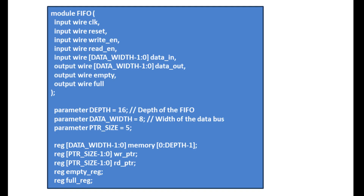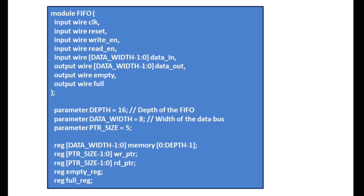Starting with the first part of the code: module, then the module name FIFO. Then the declaration of all input/output signals — clock, reset, write enable, read enable, data in, data out, empty, and full. The data in and data out sizes are defined in terms of data bit using the parameter. Parameter depth equals 16, parameter data bit equals 8. The benefit of using parameters is that whenever you want to change the size of your FIFO, you only need to change the parameter value without changing the entire code.